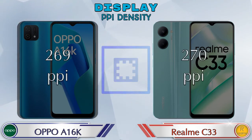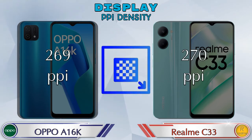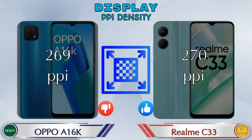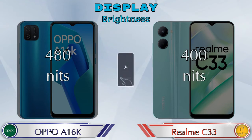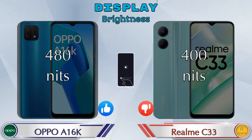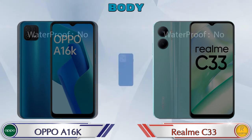Talking about PPI density, the A16k has 269 pixels per inch and the Realme C33 has 270 pixels per inch. Talking about brightness, the A16k has 480 nits and the Realme C33 has 400 nits. Let's see the complete detail of the body of both phones.